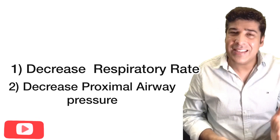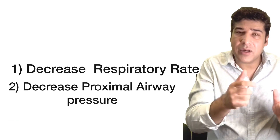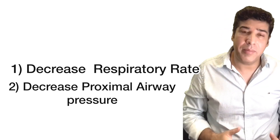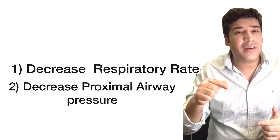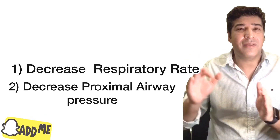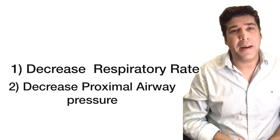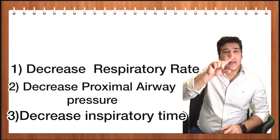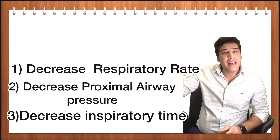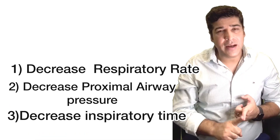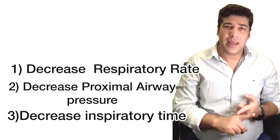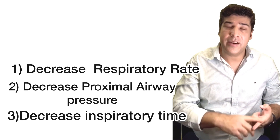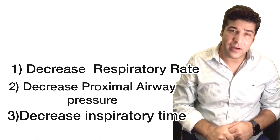The second thing in pressure control ventilation: you can decrease the proximal airway pressure — the targeted pressure. By decreasing the pressure, the tidal volume will be decreased, and the effect of breath stacking and gas trapping will be minimized. Additionally, since pressure control ventilation is time-cycled, you can decrease the inspiratory time, which will increase the expiratory time. So in pressure control ventilation, you can decrease proximal airway pressure, decrease inspiratory time, decrease respiratory rate, and increase the threshold for triggering.